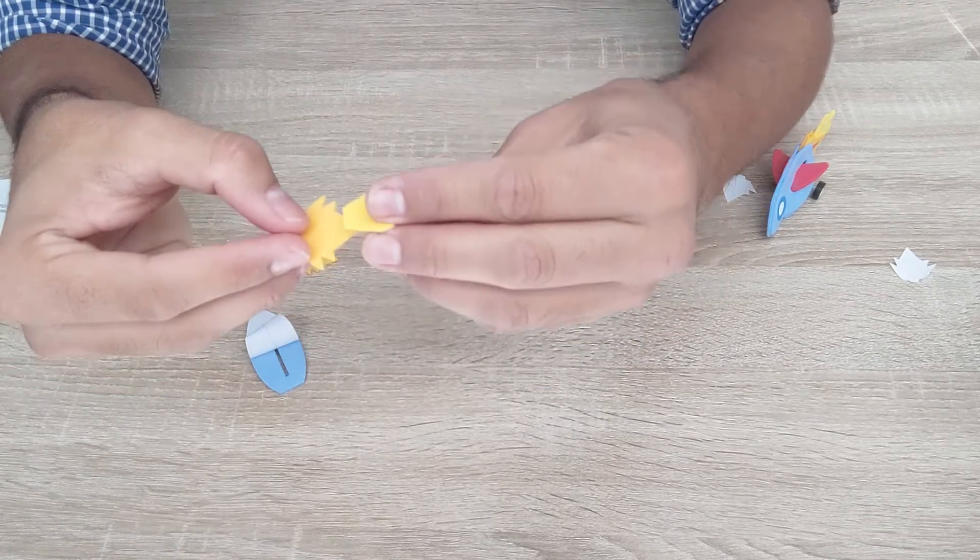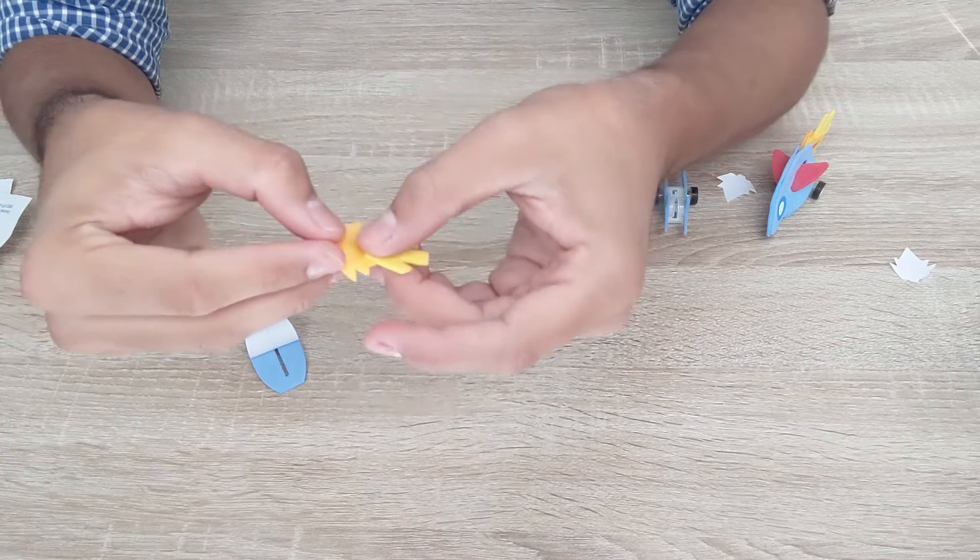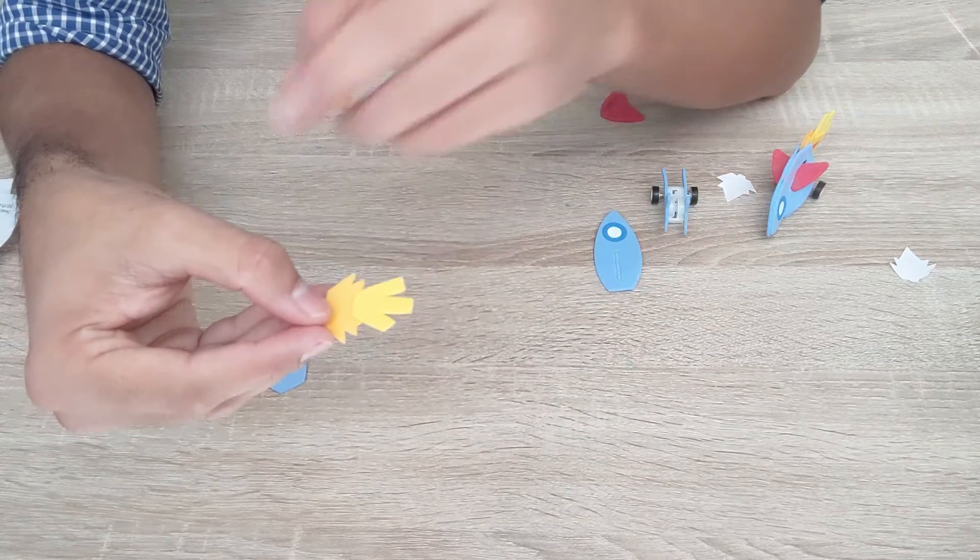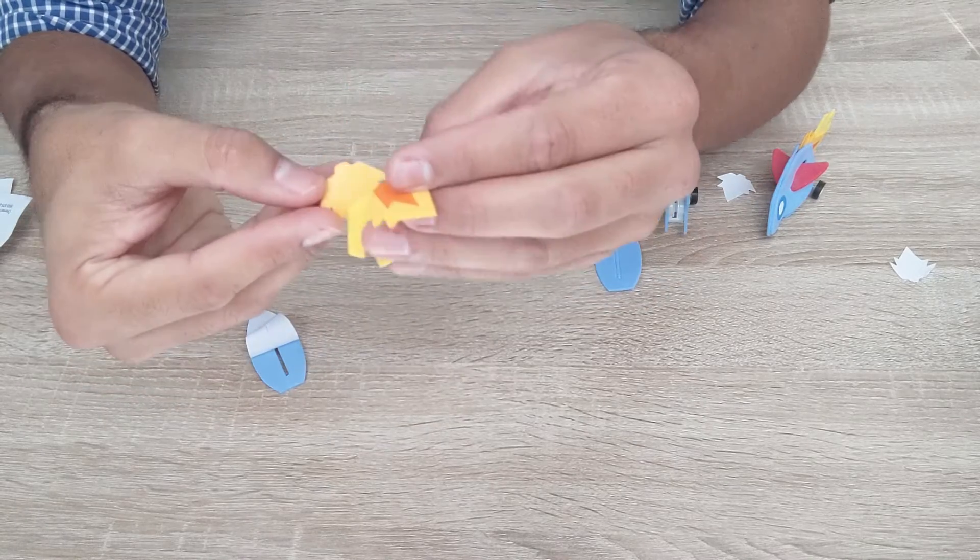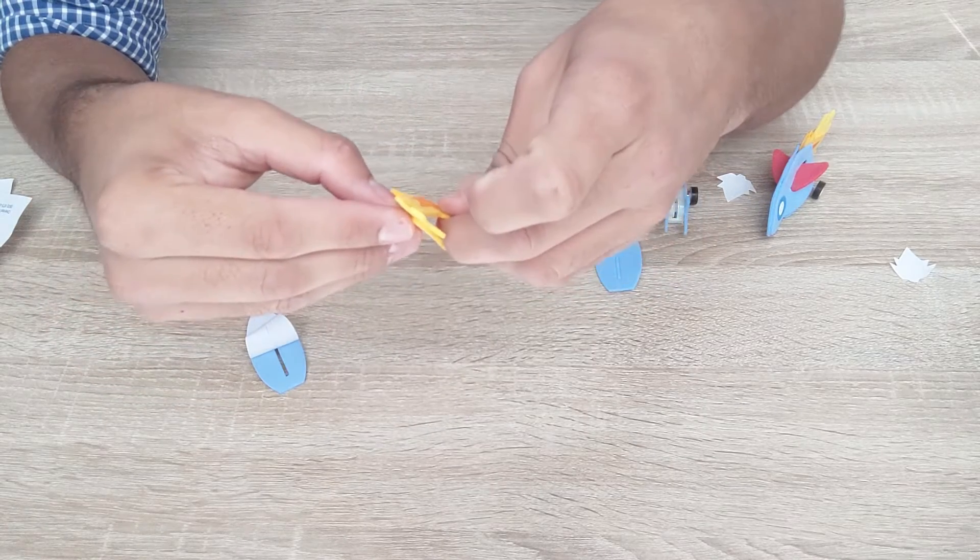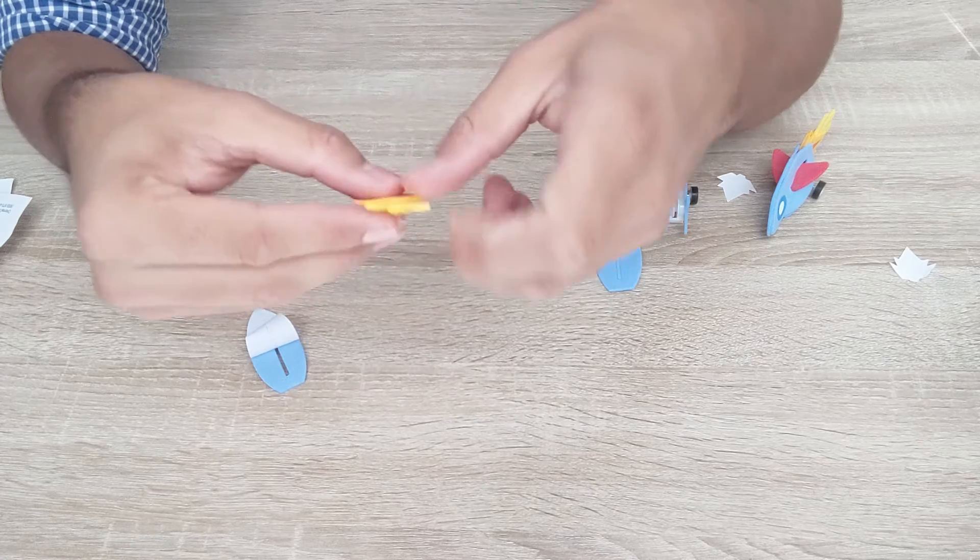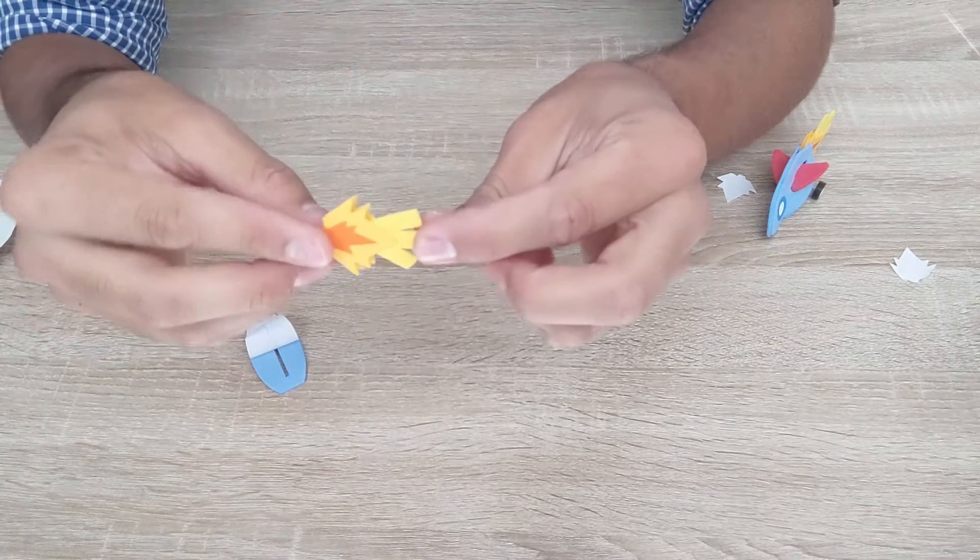And you're going to go ahead and sandwich this yellow part to the orange part. So I'm going to place it right near the top like that. Grab my other orange piece, make sure it's symmetrical, and kind of make a little sandwich. And it should look just like that.